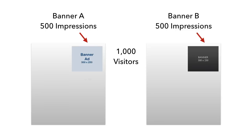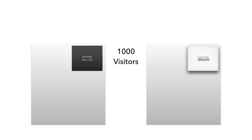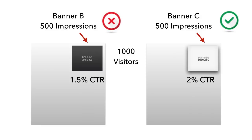If banner A gets a 1% CTR and banner B gets a 1.5% CTR, you have found out which variation of the banner performs better. You can run another A-B testing experiment with a new design and try to improve the CTR even more. There is no limit to how many experiments you can run.